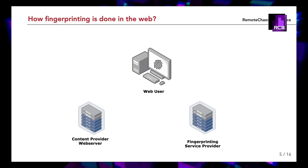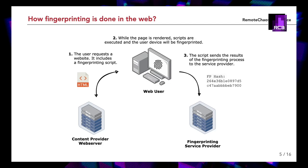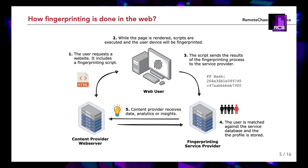Now, let's show how this fingerprinting process is embedded in the web. Most typically, there are three parties involved: a web user, a first-party content provider, and a third-party fingerprinting service. The content provider embeds a fingerprinting script into their service. When a user visits the web page, the browser downloads and executes each script in the page source. The fingerprinting script executes on the user device and starts collecting device features. Either all collected data or a simple profile hash is sent to the fingerprinting service, which matches the received identifier against its database of known profiles. If the profile matches, the user is identified; otherwise a new profile is created.